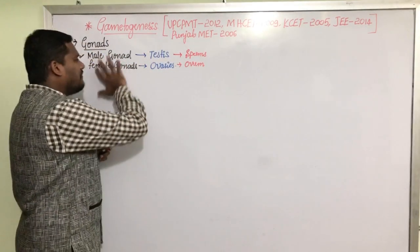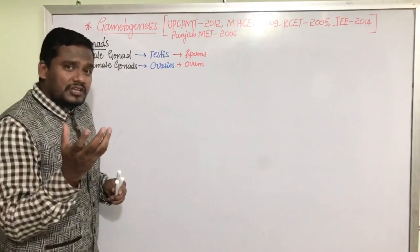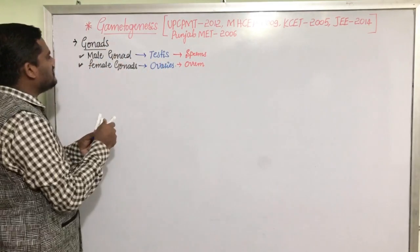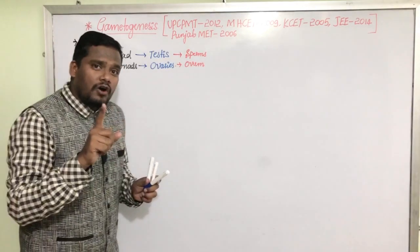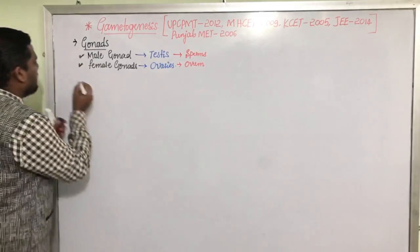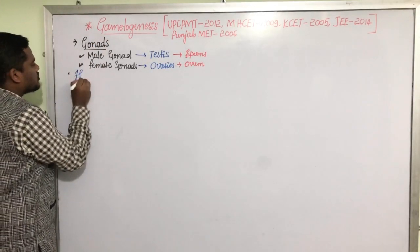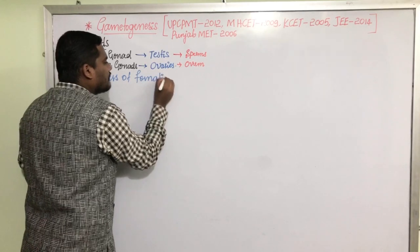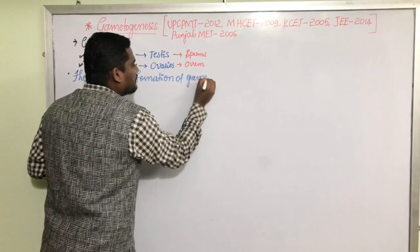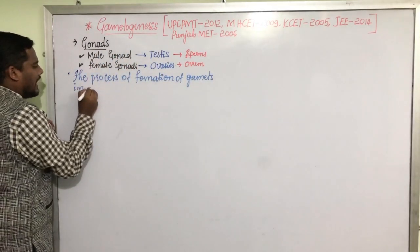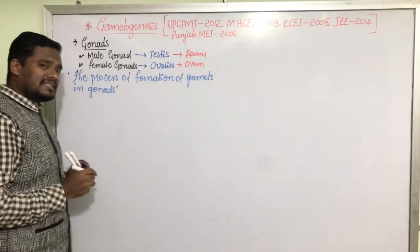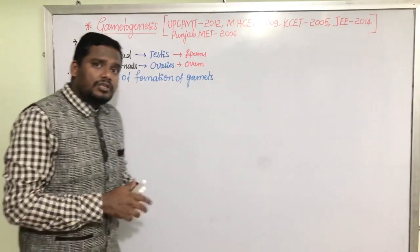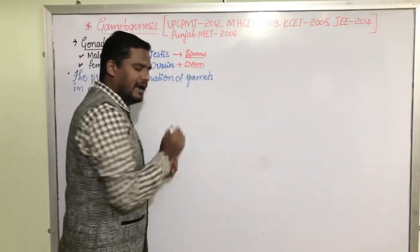Now, based on this, we can construct the exact scientific definition of gametogenesis. Gametogenesis means the process of formation of gametes in gonads. That is the exact scientific definition of gametogenesis. Since we have two types of gametes — male gamete and female gamete — gametogenesis can be classified into two types.